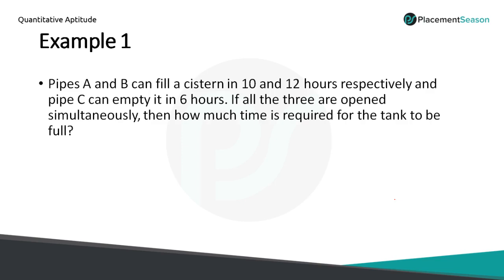Let's discuss this with a simple example. Consider three pipes A, B, and C. Pipe A and B can fill a cistern in 10 and 12 hours respectively. Just like in Time and Work, A filling in 10 hours means its one-hour work is 1/10. Similarly, B's one-hour work is 1/12. C can empty the tank in 6 hours, so its one-hour work is 1/6.